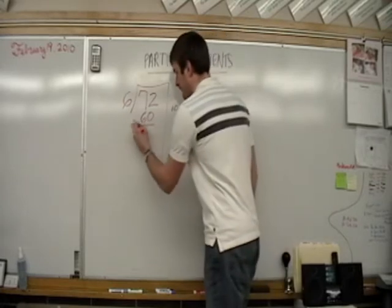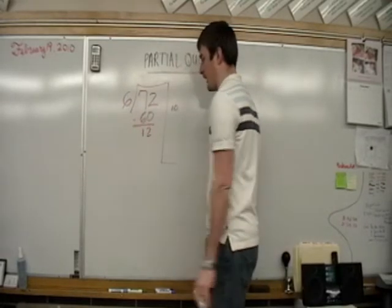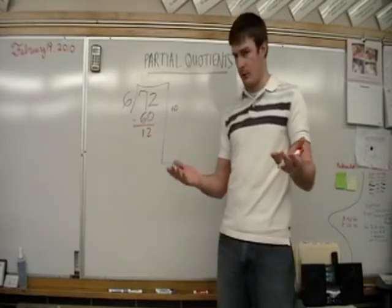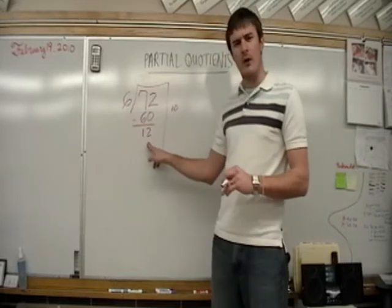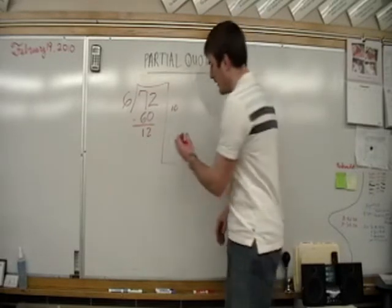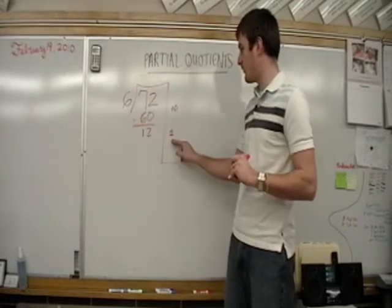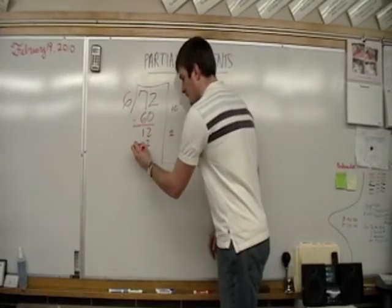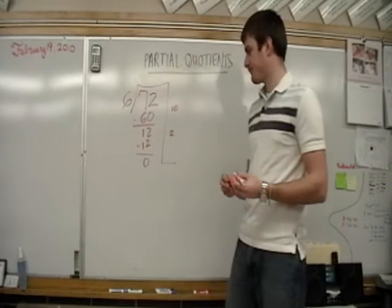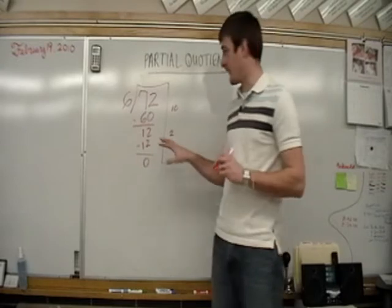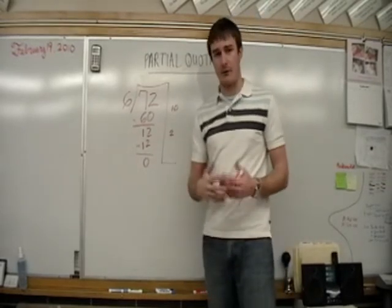So we're going to subtract 60. 2 minus 0 is 2, 7 minus 6 is 1, and we are left with 12. So the next thing we want to think is, how many times will 6 go into 12? Well, if we're savvy with our math facts, we know that it is 2. 6 times 2 will give us 12. We subtract, and we are left with 0. Now, that's very simple. I set that up very basic, so we can take a look at that as our first example.